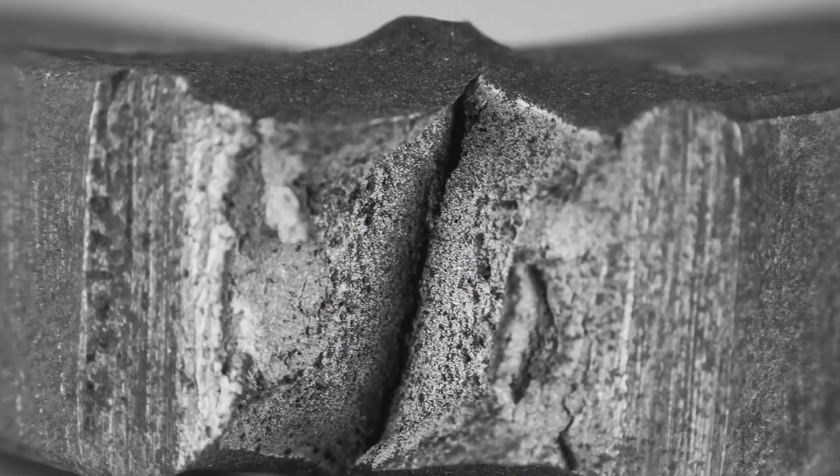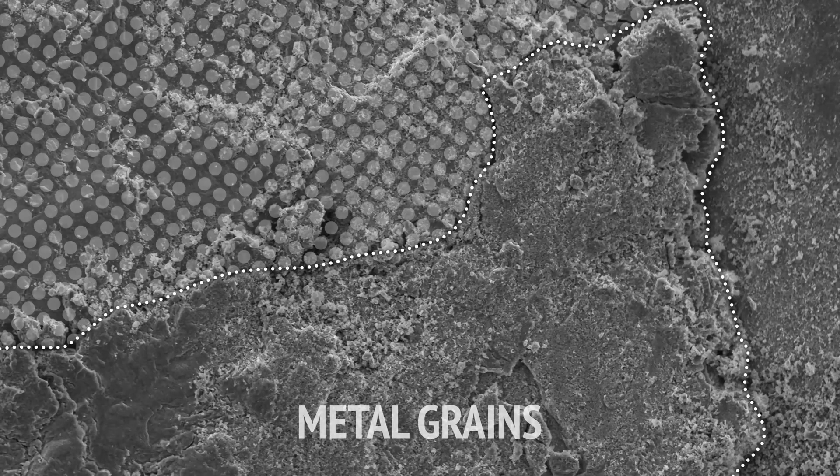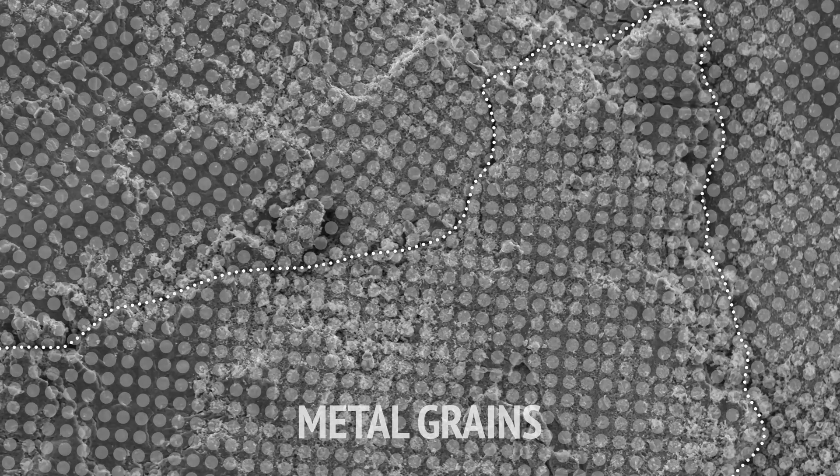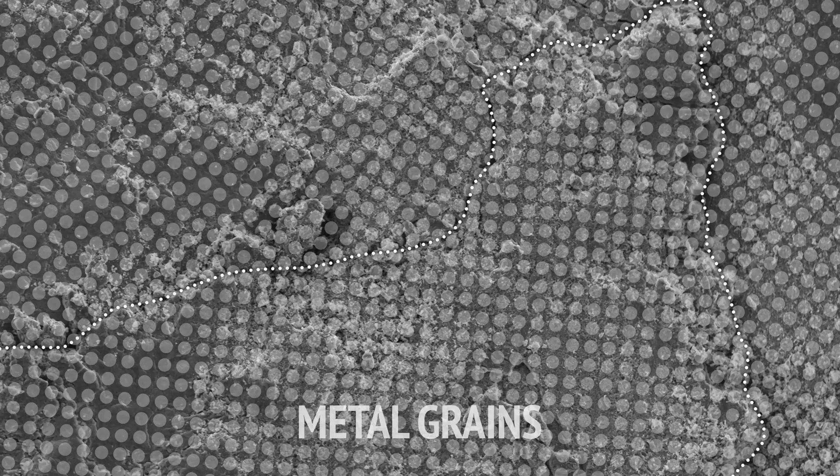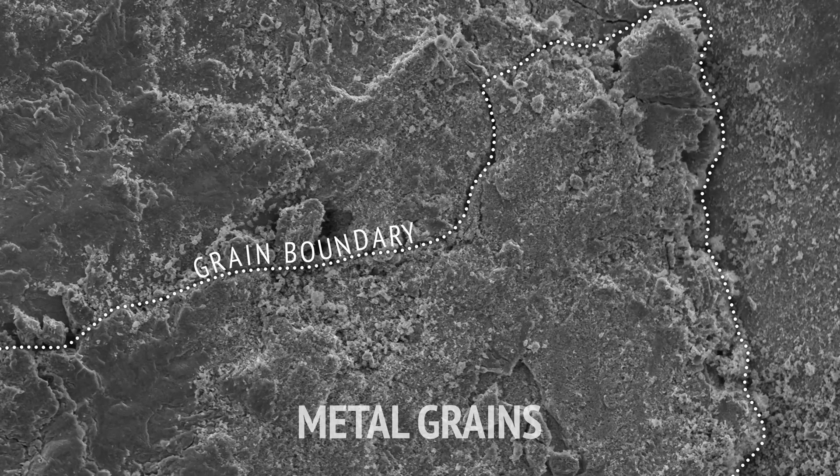Metals have a crystalline structure, which we can start to see as we zoom in on this fractured aluminium metal. Each crystal, or grain, is made of a regular lattice of atoms, which are all oriented in the same way. The borders between these distinct crystals are called grain boundaries.